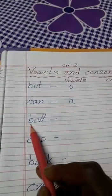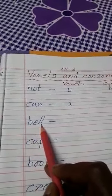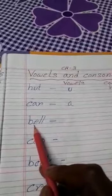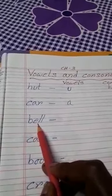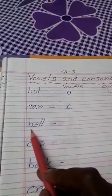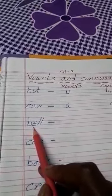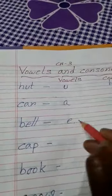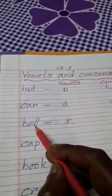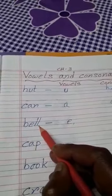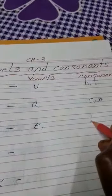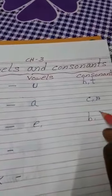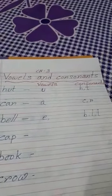Now this is bell. B, E, double L — bell. Which one is vowel here? E is a vowel. And B and double L are consonants.